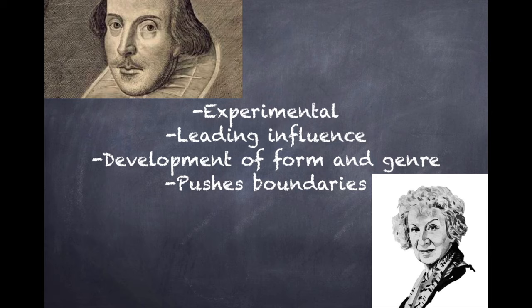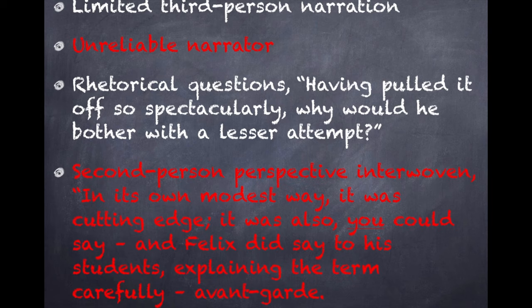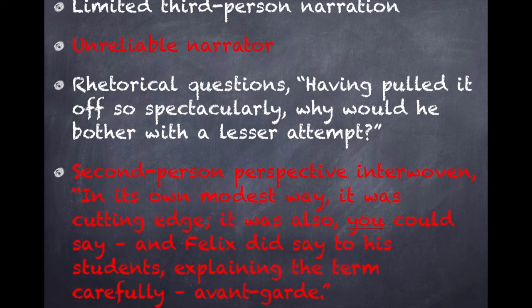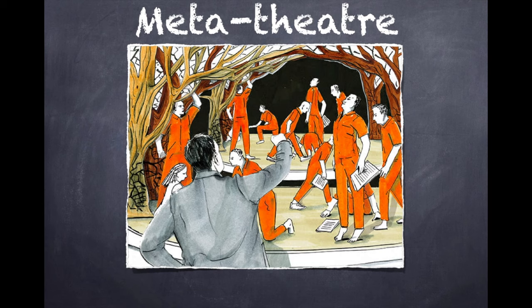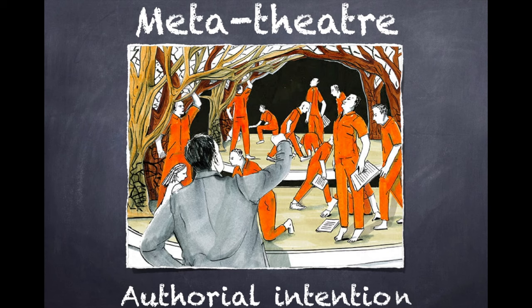Hag-Seed is written as a limited third-person narration, indicating Felix's fallibility and unreliability as a narrator. The audience is invited to be part of the text, achieved through the frequent use of rhetorical questions — 'Having pulled it off so spectacularly, why would he bother with a lesser attempt?' — and the use of second-person perspective throughout, which also indicates an implied audience or reader: 'In the event, the Fletcher correctional Shakespeare class was a hit. In its own modest way, it was cutting edge. It was also, you could say — and Felix did say to his students, explaining the term carefully — avant-garde.' Meta-theatre is also present throughout the novel as the play is rehearsed and performed. It is woven into the novel through Felix's voice as he talks through his thinking process into how and why he intends to stage The Tempest, inviting us, the readers, to explicitly consider authorial intention.